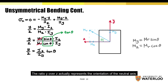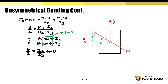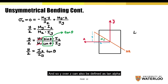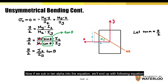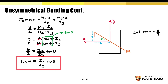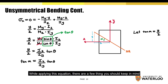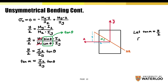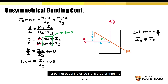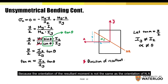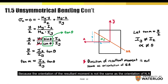The ratio of y over z actually represents the orientation of the neutral axis, and so y over z can also be defined as tan(alpha). Now if we substitute tan(alpha) into the equation, we'll end up with the following equation. While applying this equation, there are a few things you should keep in mind: Iz cannot equal Iy since Iz is greater than Iy, and alpha cannot equal theta because the orientation of the resultant moment is not the same as the orientation of the neutral axis.